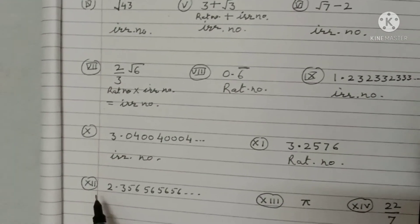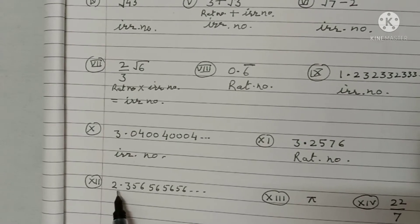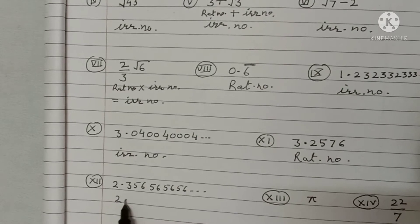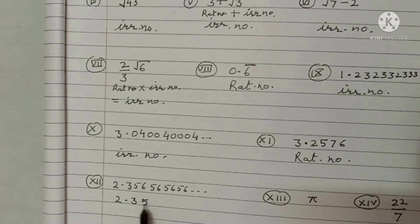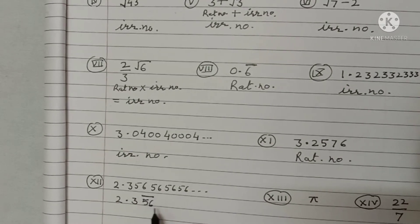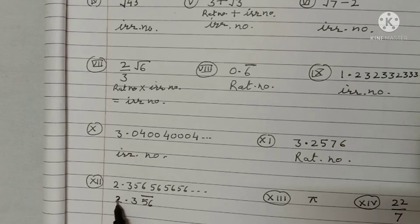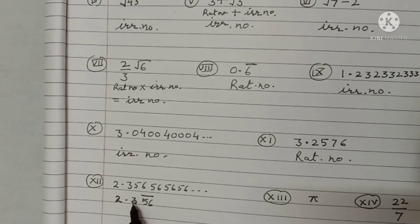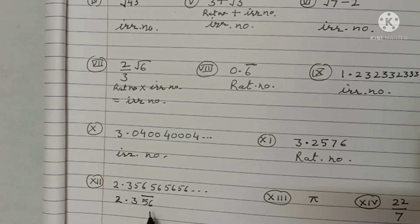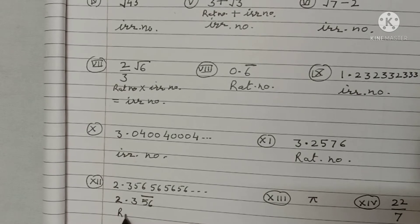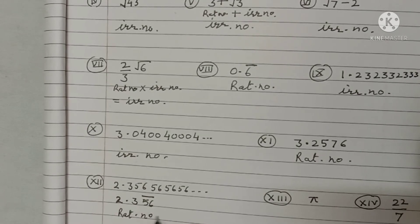Part twelve: 2.3565656... You can write it as 2.3 with a bar on 56 — this is repeating. The decimal form is recurring, so this is terminating and repeating. Such numbers are known as rational numbers.